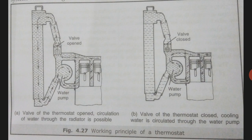In the B section of the picture, you can see when the valve of the thermostat is closed, cooling water is circulated through the water pump. First of all, what is a thermostat valve? A thermostat valve is used in the water cooling system to regulate the circulation of water in the system to maintain the normal working temperature of engine parts during different operating conditions.